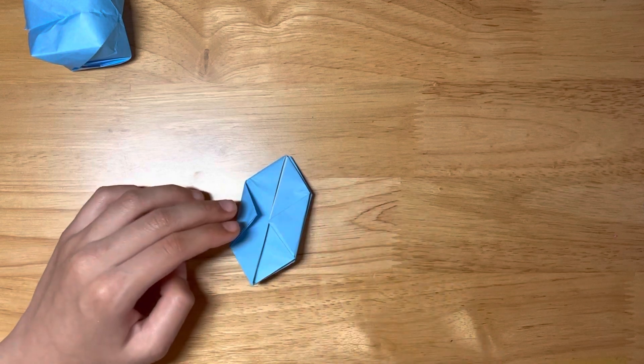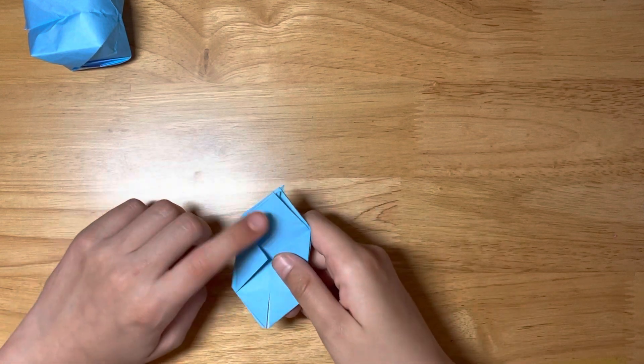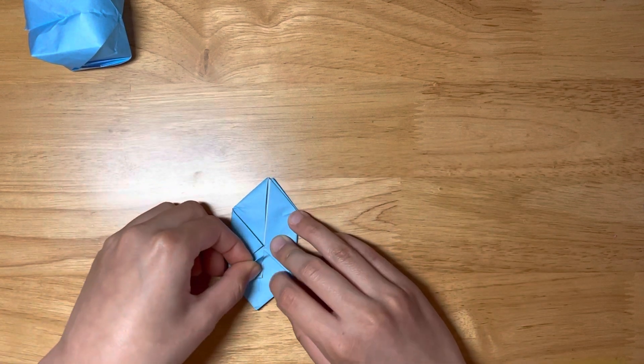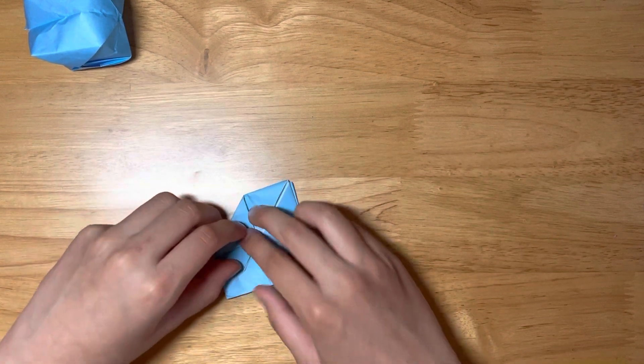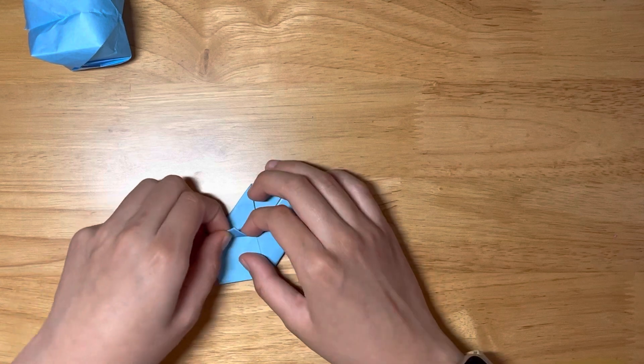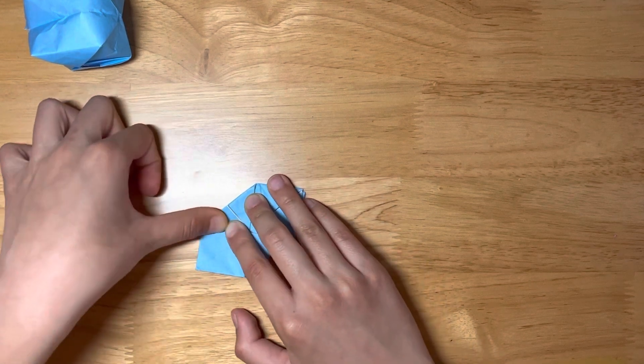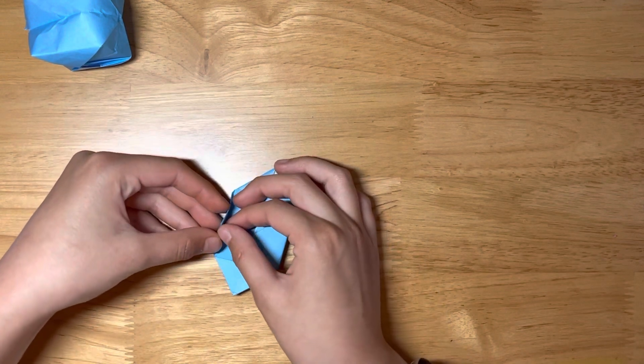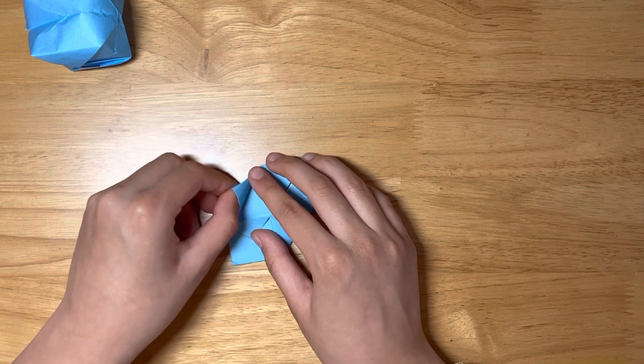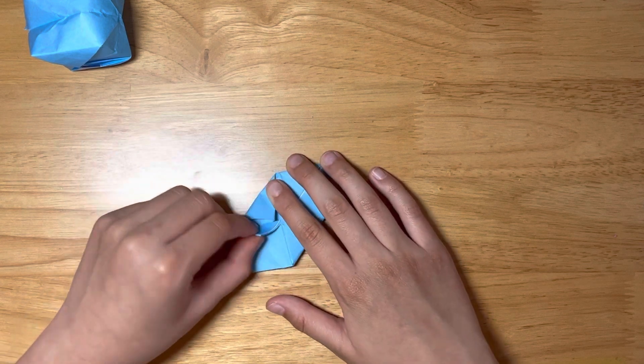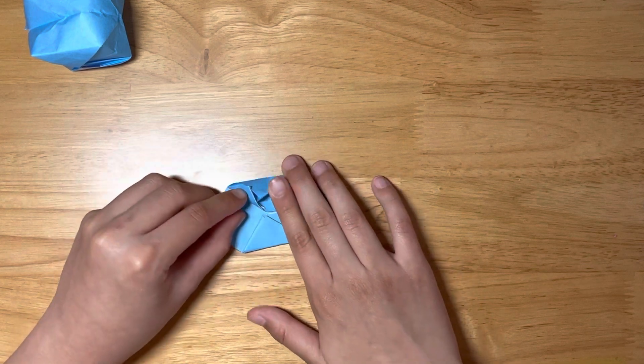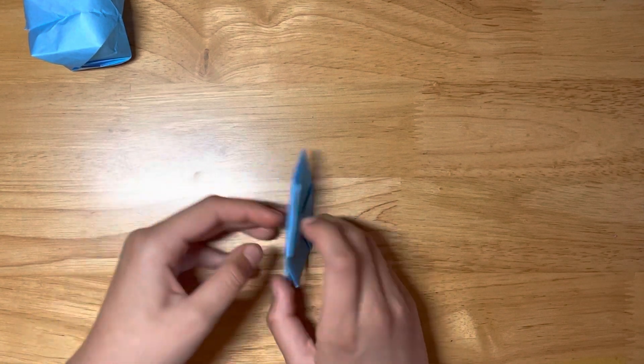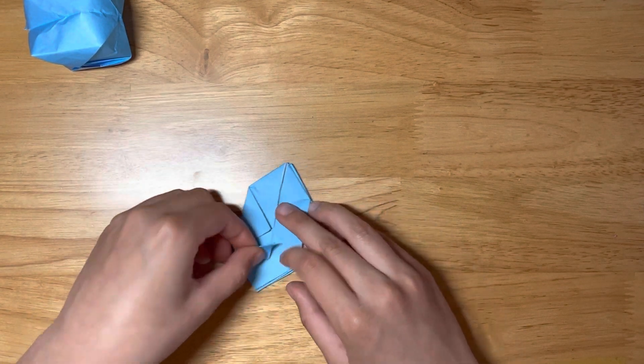And we're going to do the same thing to the back. We're going to put these two flaps in the back. So let's do it. So the same thing, then open the inside, put the triangle in, like that. Now the same thing but in the back as I said.